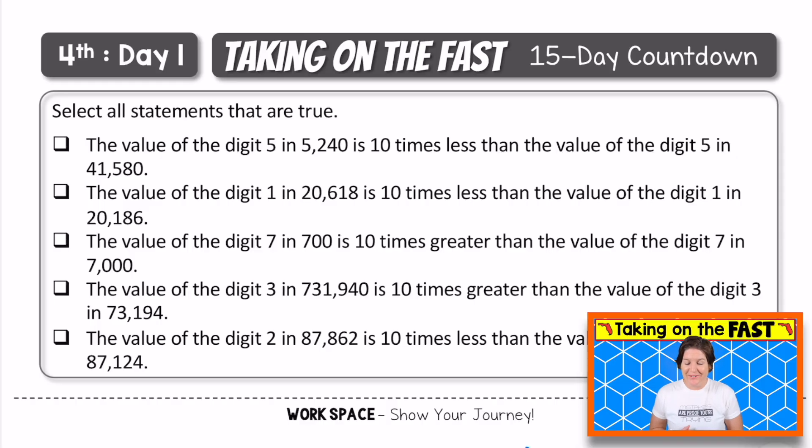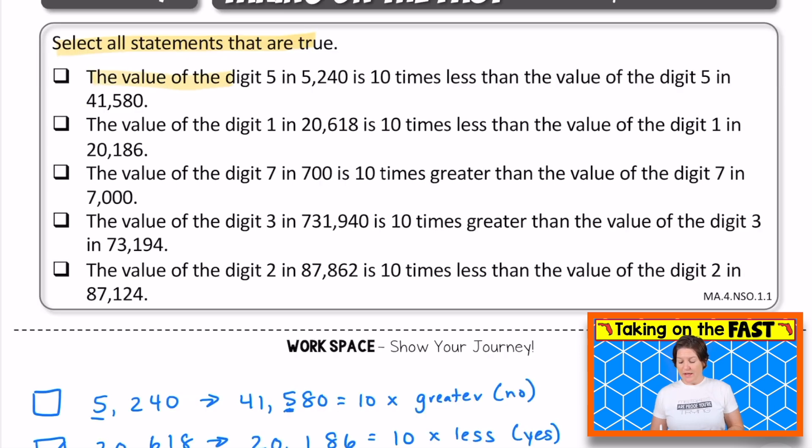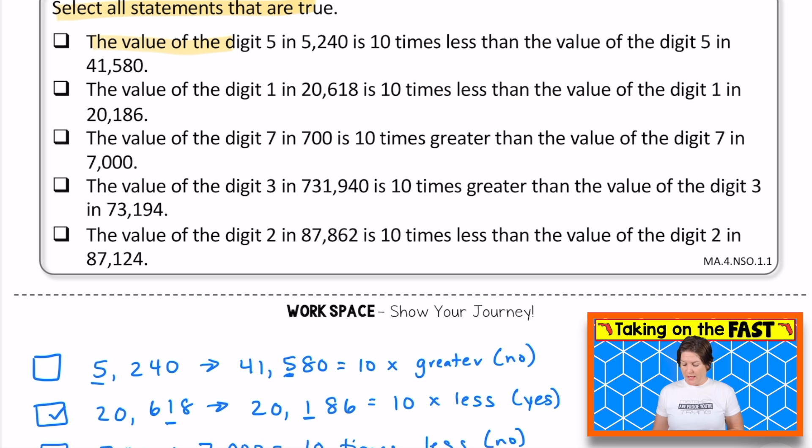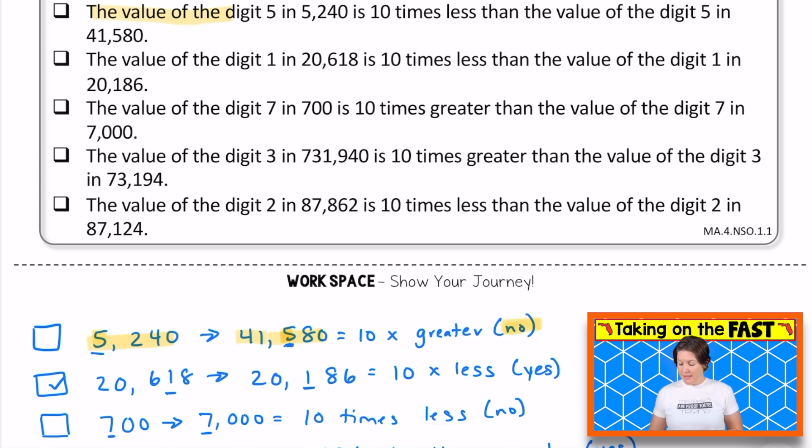So without further ado, let's get to it and let's do this thing. We're on day one. This first problem is a multi-select problem, so we need to go ahead and make sure that we select all the correct answers here. This one says to select all the statements that are true. So the first one says the value of the digit five in 5,240 is 10 times less than the value of the digit five in 41,580. Now this one, I went ahead and I put the digit five right here in 5,240 and the digit five in 41,580. And I said, this is not right because that would be a digit five that's 10 times greater, not 10 times less. So no.